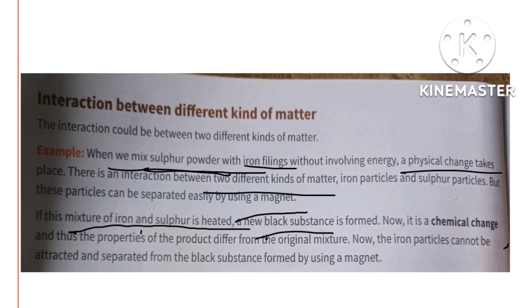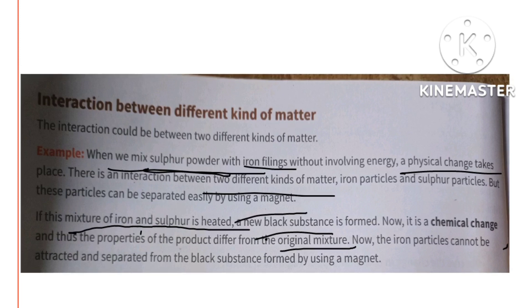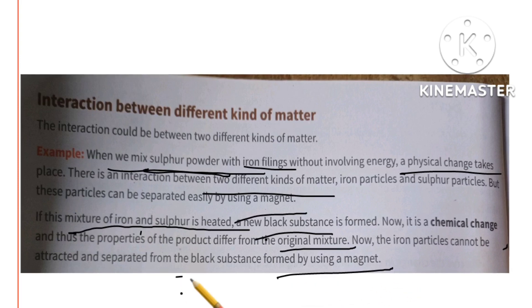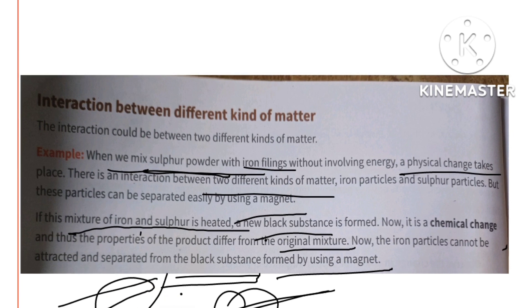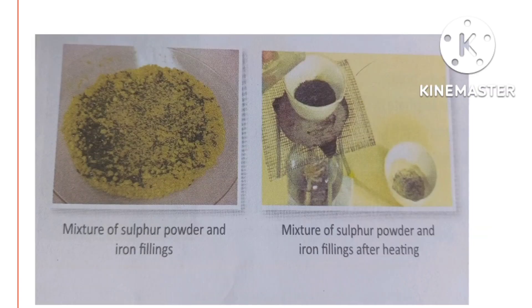The properties of the product differ from the original mixture. After heating, these particles cannot be separated from the black substance using a magnet, because we no longer have separate sulfur and iron particles — we do not have a mixture of sulfur powder and iron fillings anymore.